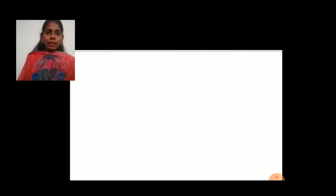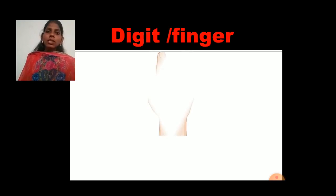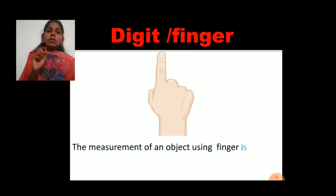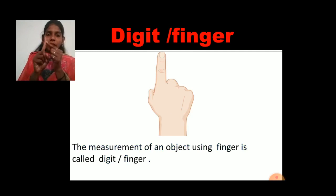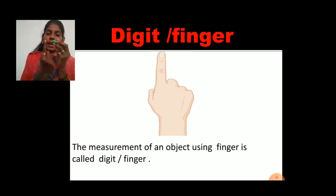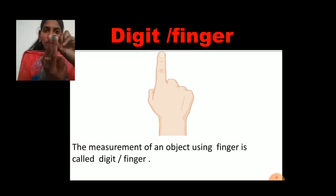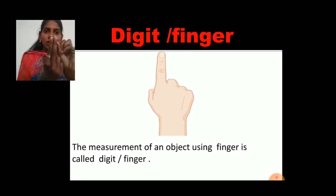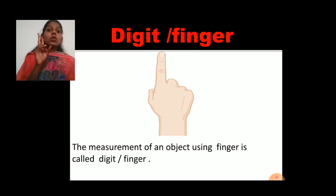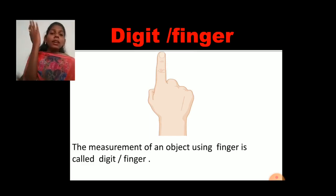Next is digit or finger. Digit or finger means measuring like this — this is one finger long, one digit long. The measurement of an object using a finger is called digit. For example, if I want to measure this sharpener using digit — this is one digit long, and this is two — so this sharpener is about two digits long or two fingers long. In earlier times, people always used their body parts to measure things.